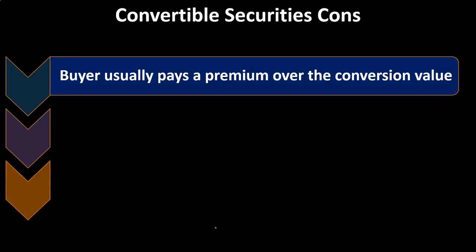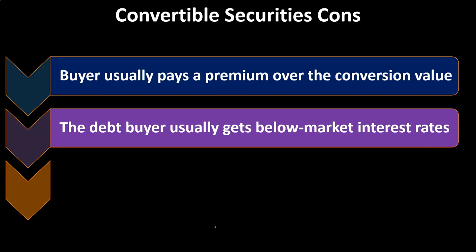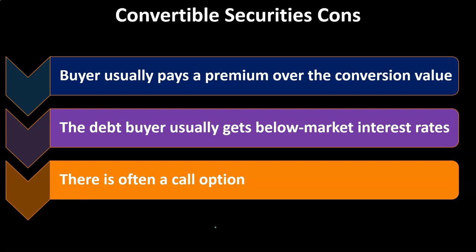Some cons for convertible bonds: the buyer usually pays a premium over the conversion value for the convertible bond. The debt buyer usually gets lower market interest rates because the risk for them as an investor goes down, and therefore they're willing to accept those lower rates — that's the point of the convertible option. There's also often a call option applied to it, because the corporation has no control over the upside if stocks go up in value, so one way to cap it is to issue a call option as well.